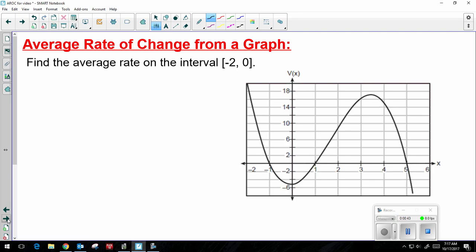From a graph, find the average rate of change on the interval negative 2 to 0. So that means that negative 2 and 0 are my x values.